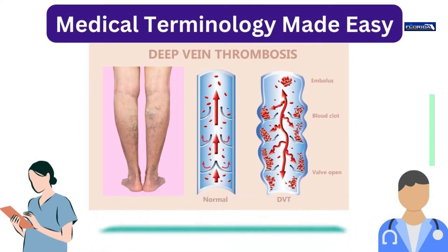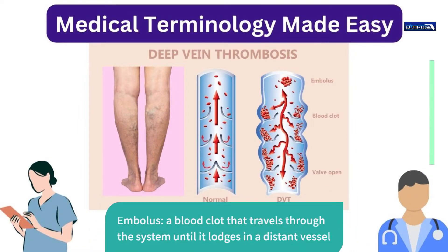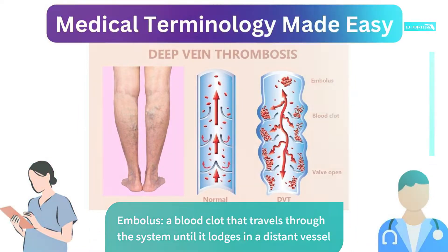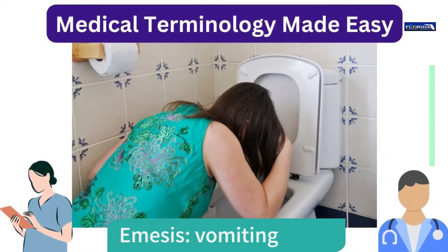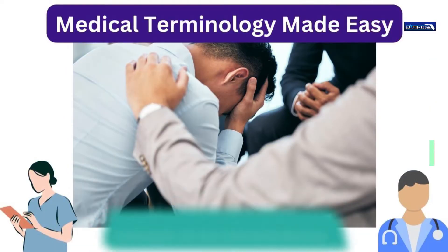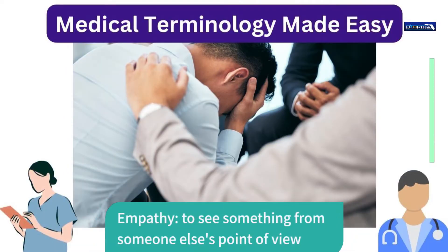Embolus: a blood clot that travels through the system until it lodges in a distant vessel. Emesis: vomiting. Empathy: to see something from someone else's point of view.